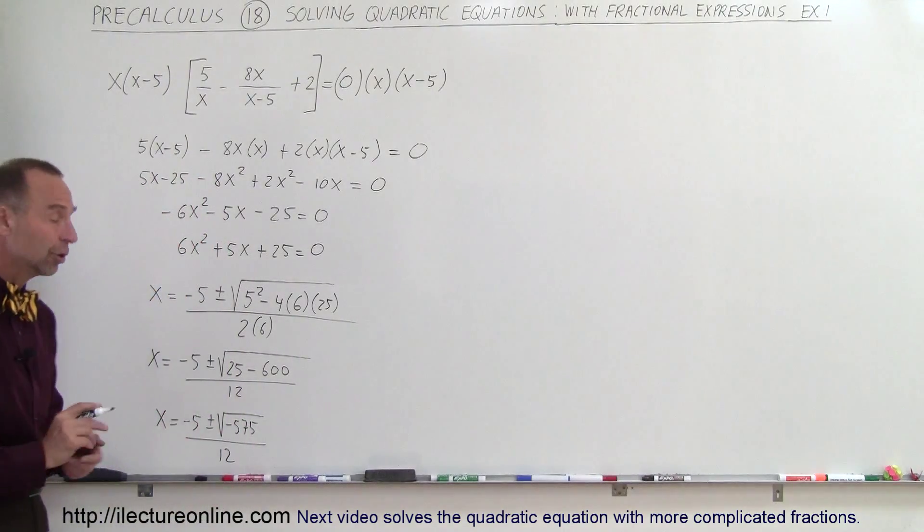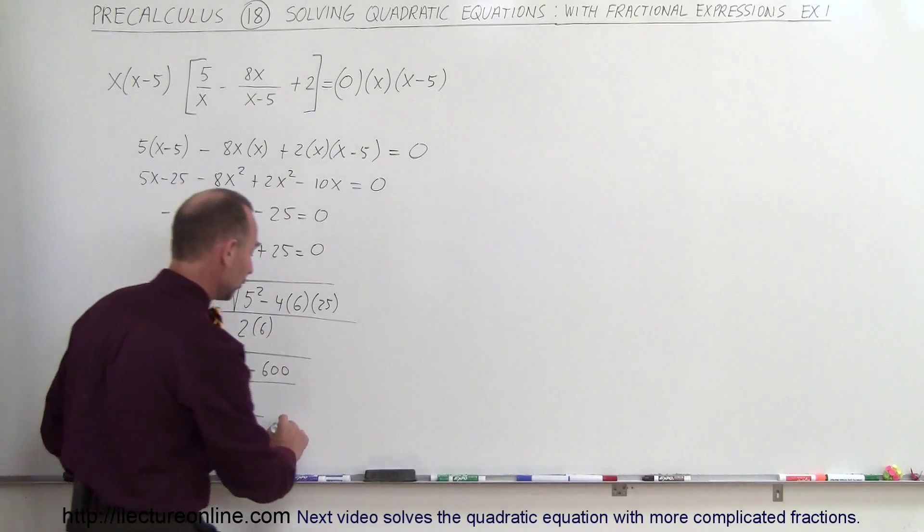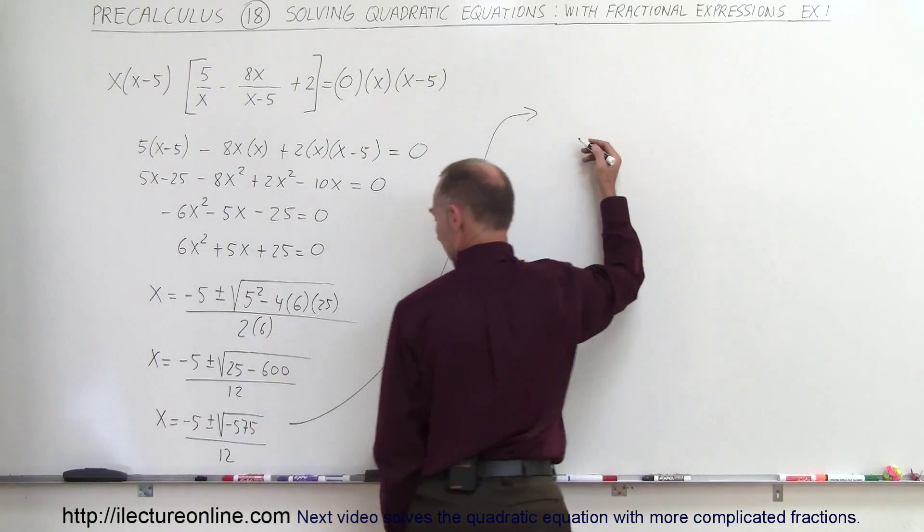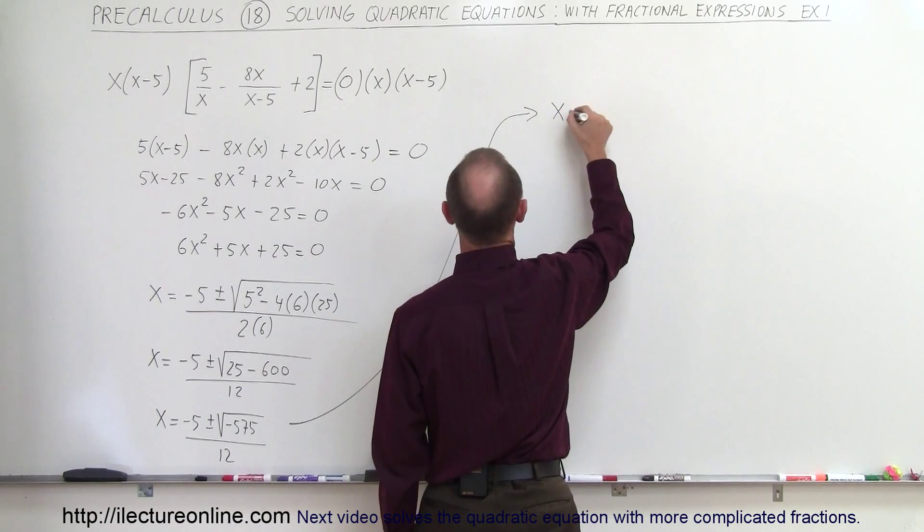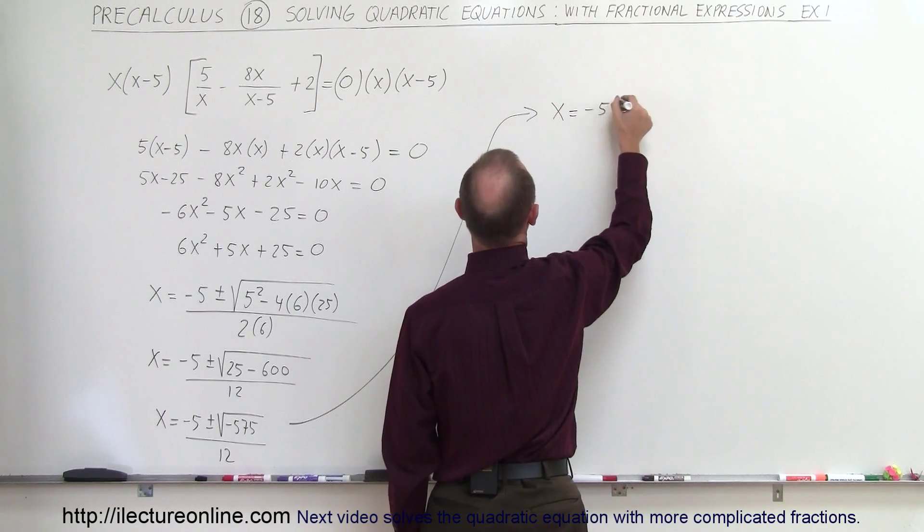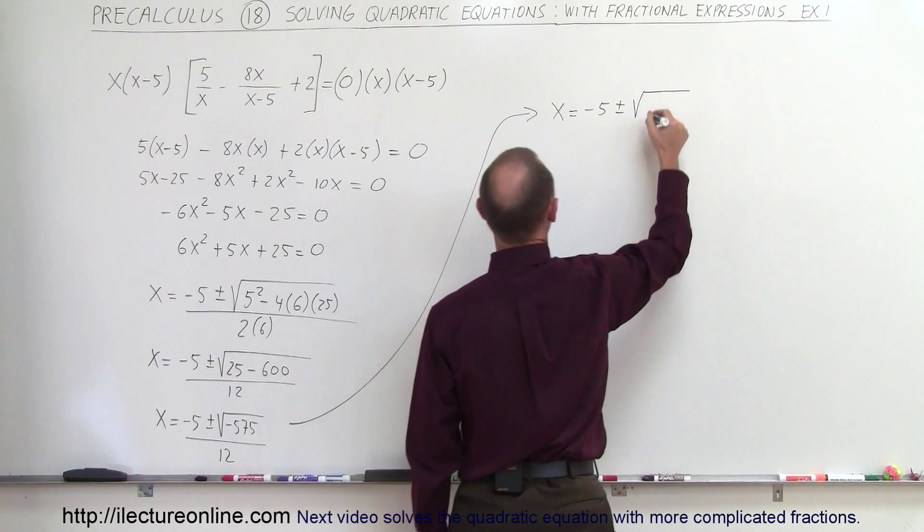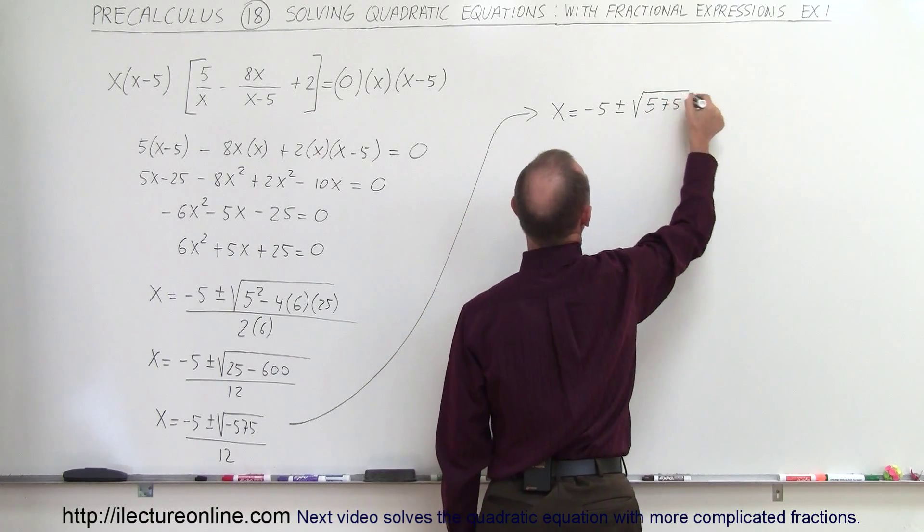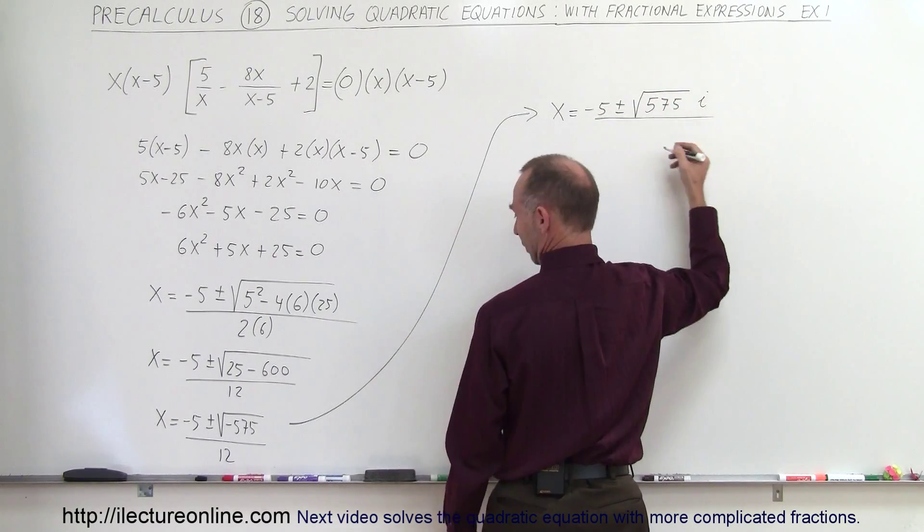So it looks like we're going to have an imaginary number here. So continuing on over here, we can say that x is equal to minus 5 plus or minus the square root of 575, times i, the whole thing, divided by 12.